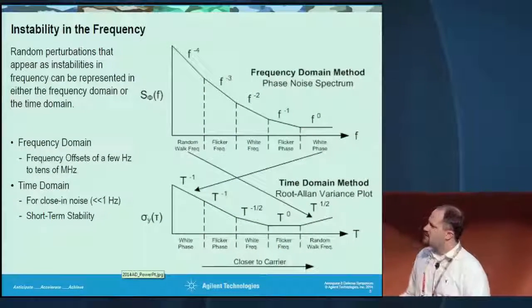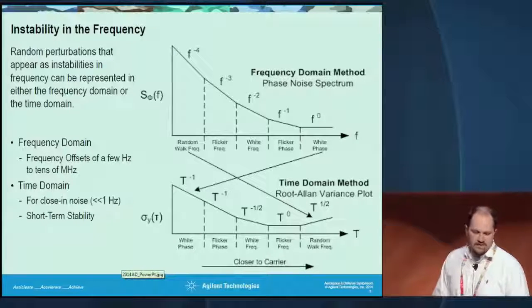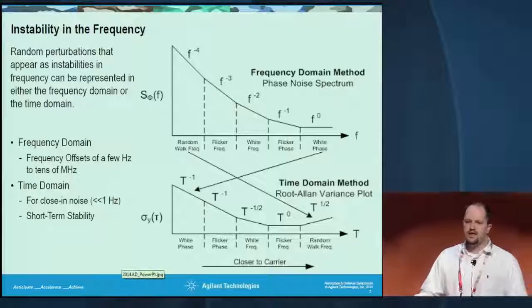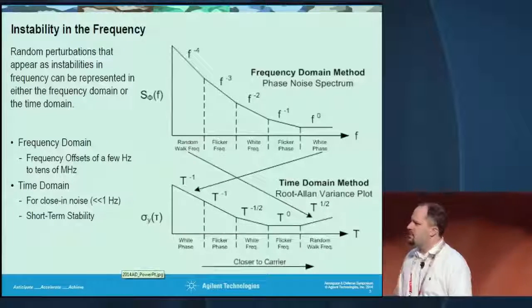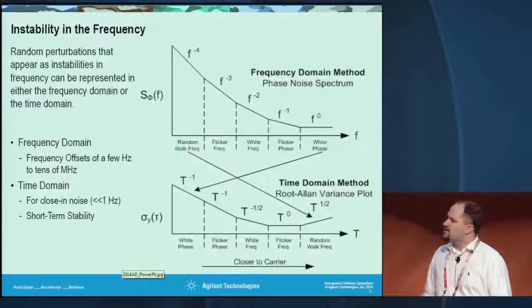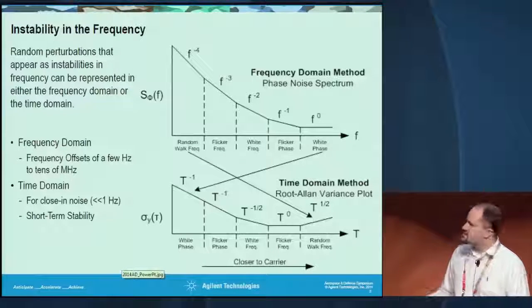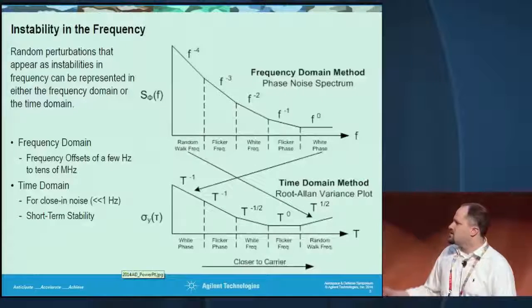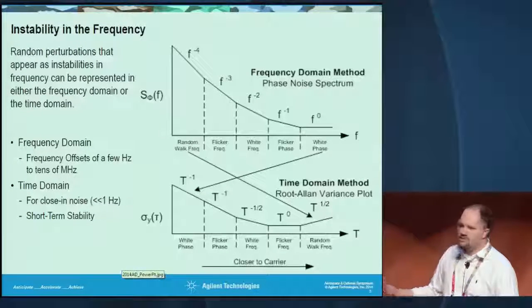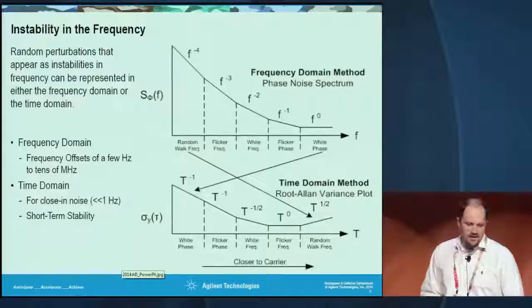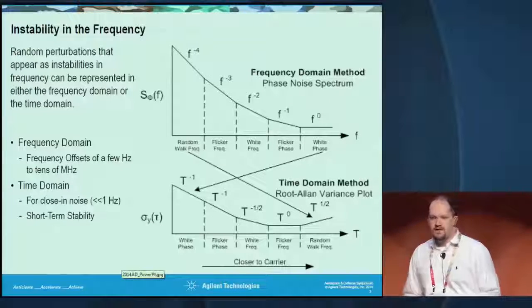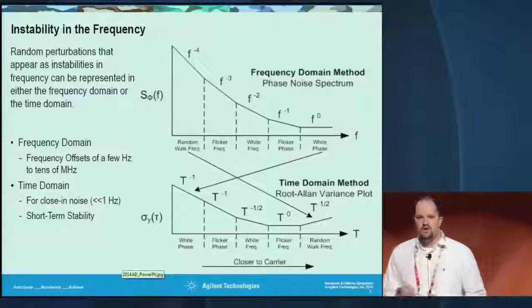Phase noise is instability in frequency, and we talk about it in two domains. One is the short-term domain, which is the most common, and then there's long-term stability, which doesn't manifest itself quite as much in the phase noise domain. We can measure it using a couple of different methods: the frequency domain, which is very common — you see single sideband measurements frequently, specifically with a logarithmic plot — and also in the time domain for close-in measurements. Different contributors are visible based on where they are in the phase noise plot, and based on which types of noise are dominant in your system, you may change the way you want to measure that device.